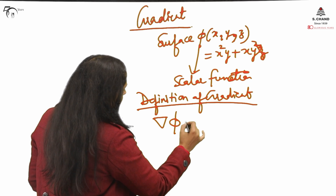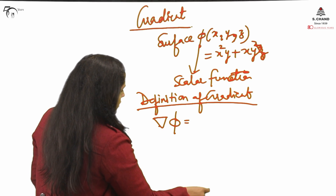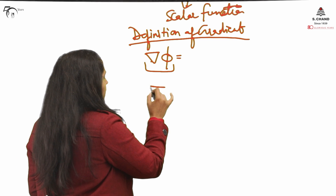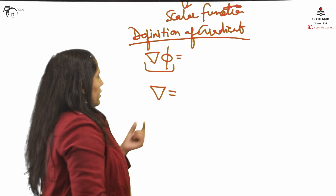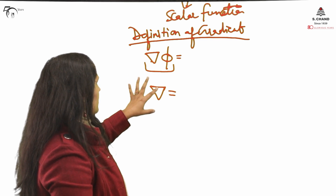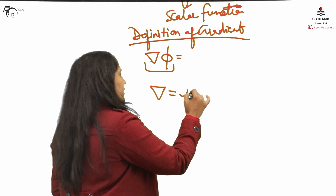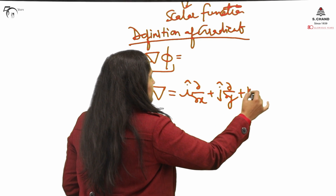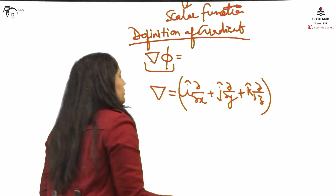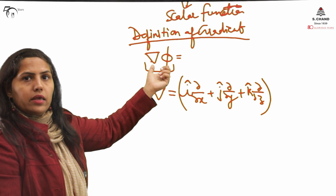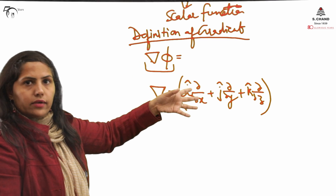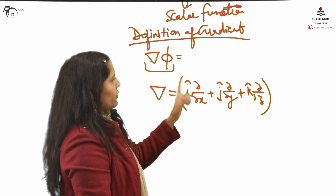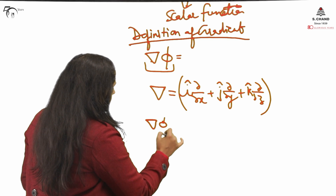The gradient of a scalar function — to understand it, I'll first define 'del.' Del is written as a reverse triangle, and it is a kind of vector operator. If del is operating on a scalar function, it gives you gradient (del phi). If it is operating on a vector, it gives you curl and divergence — but that is a further part. So del operating on a scalar function gives you gradient.